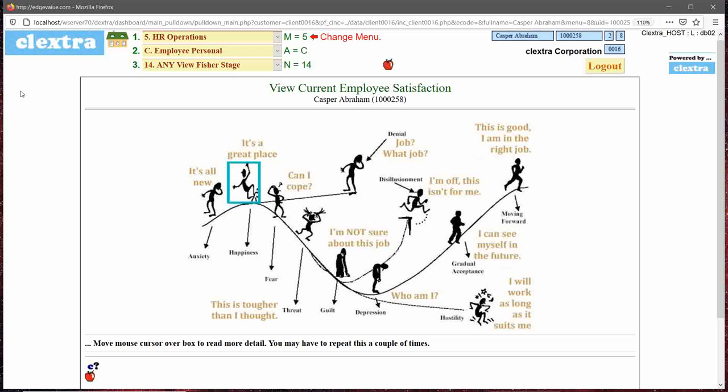The 'can I cope' factor starts coming in, and then you're in denial. What job? Yeah, it's something I do morning to evening. There's a denial attitude that can creep in. The downward spiral can also be a threat—I'm not sure about this job. There is guilt; this is tougher than I thought.